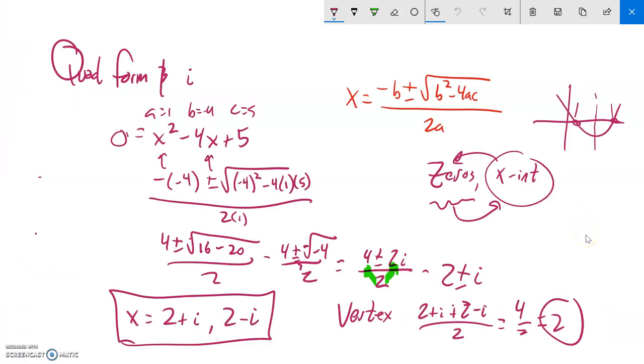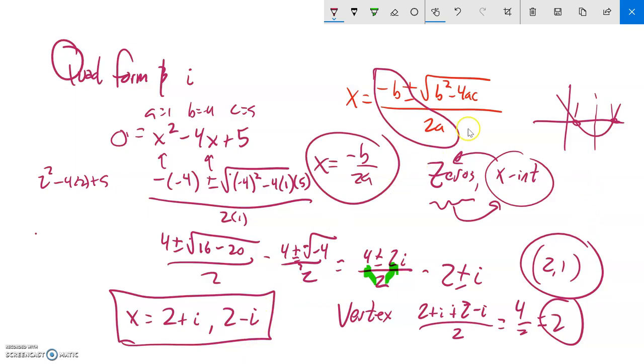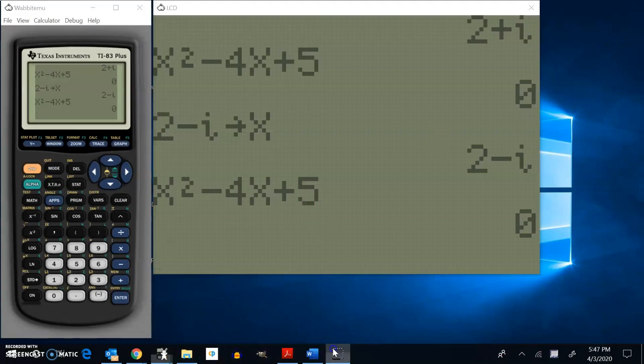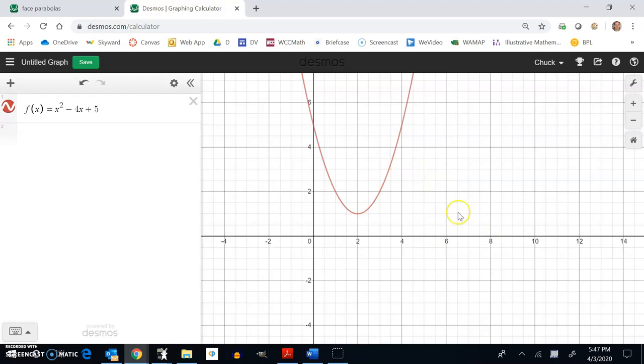So if I plug this 2 back in, it'll spit out a 1. 2 squared minus 4 times 2 plus 5. So my vertex would be the point 2, 1. And I could get at that with the negative b over 2a part. Remember for x, x equals negative b over 2a. That'll give me the x part. So the plus or minus part, notice how that plus or minus i really came from this part divided by the 2. 2i divided by 2, the plus or minus part. But this part right here tells me the x part of the vertex.